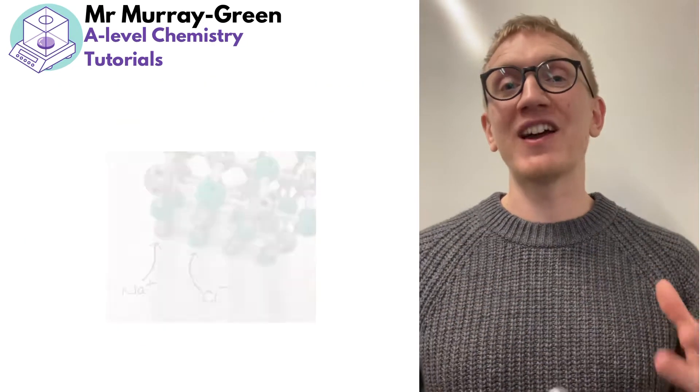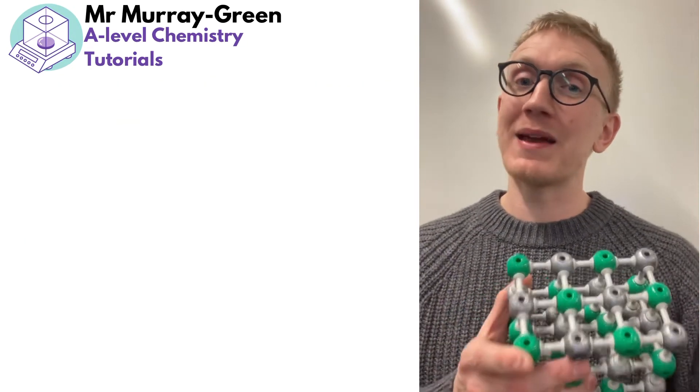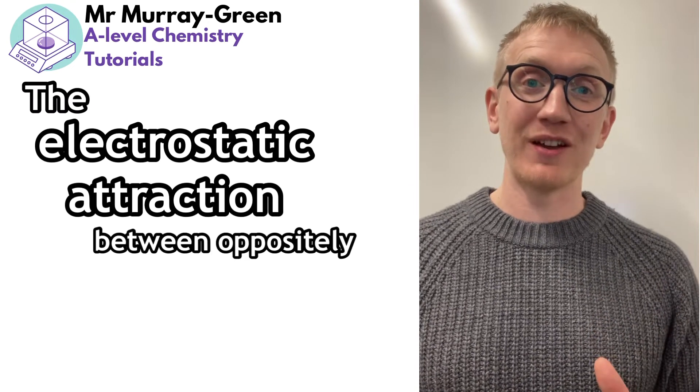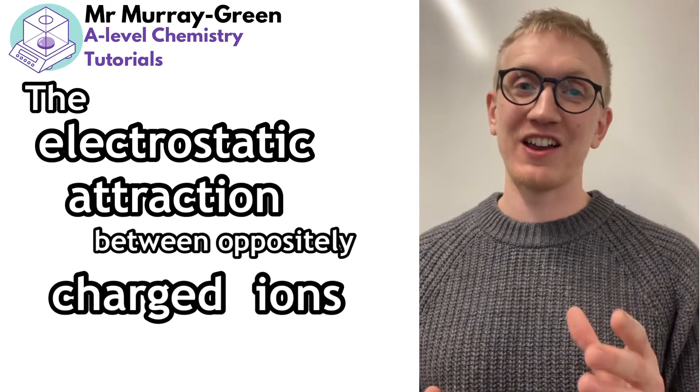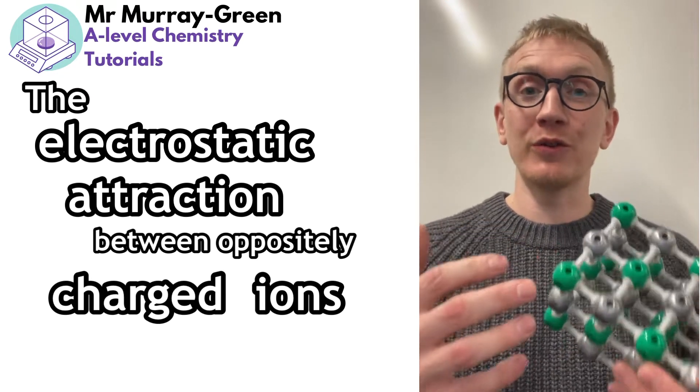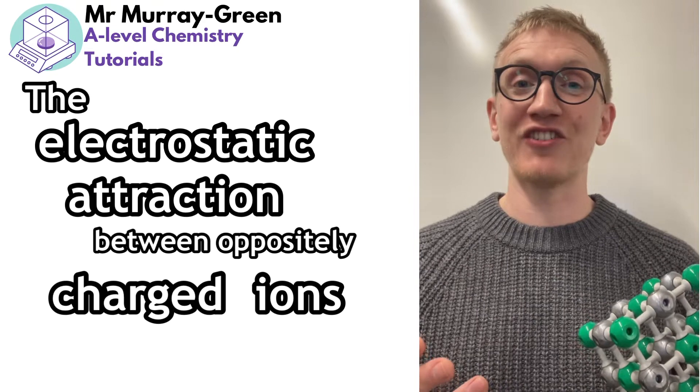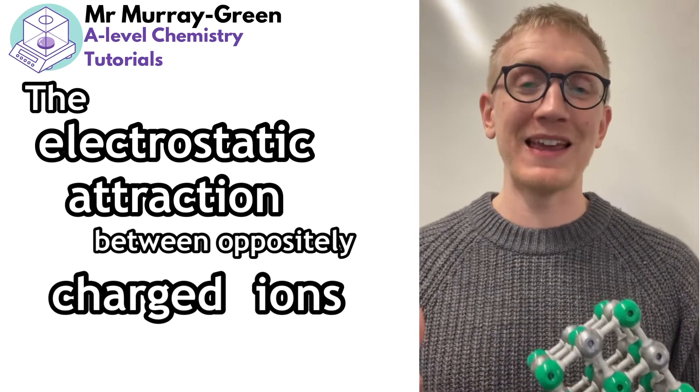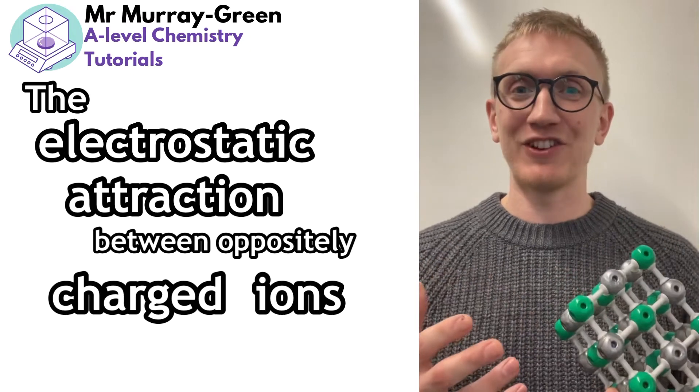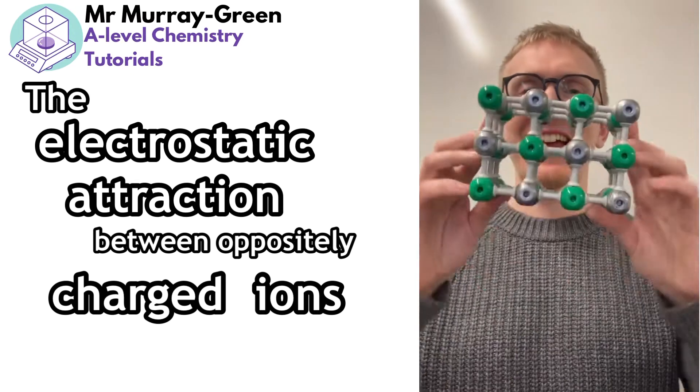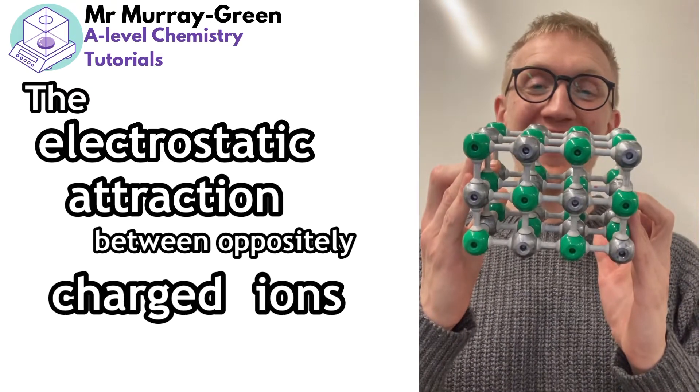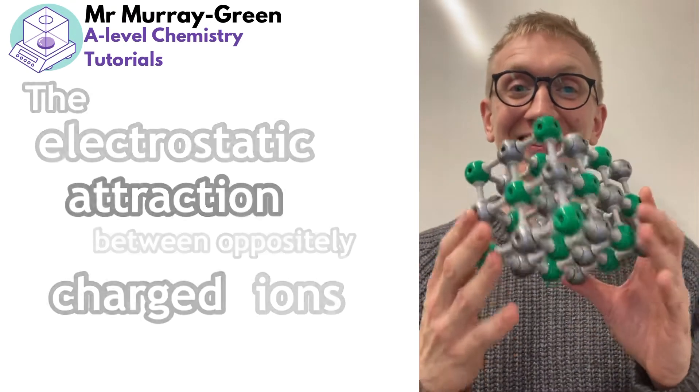So when we have a giant ionic lattice at A-level we make the clear definition that this is the electrostatic attraction between oppositely charged ions. With the metals being our cations so they lose electrons and become positively charged, and the non-metals being our anions so they accept electrons and become negatively charged. And what we end up with is a regular and repeating pattern like this of the oppositely charged ions in a giant lattice structure.